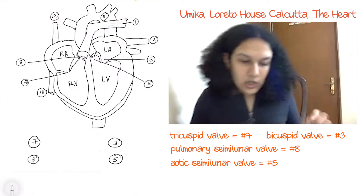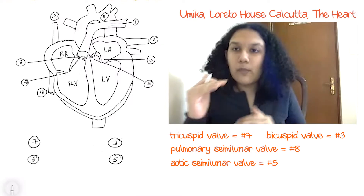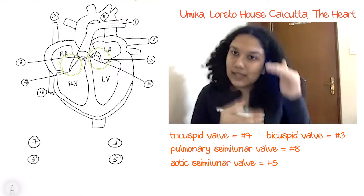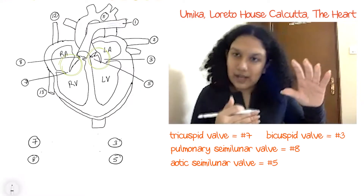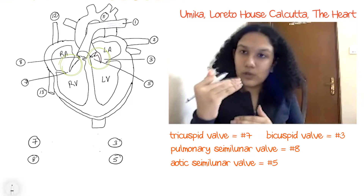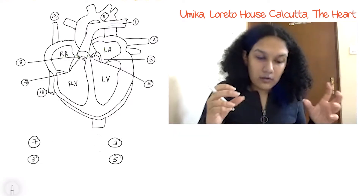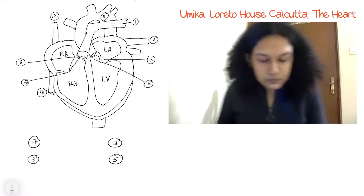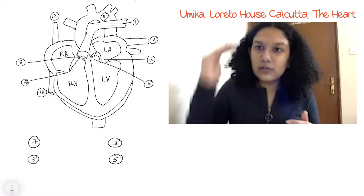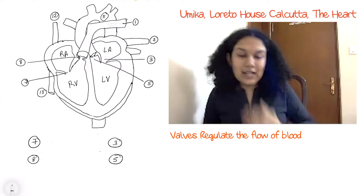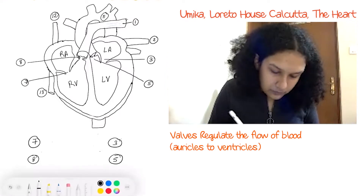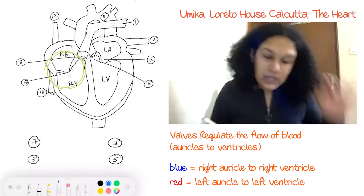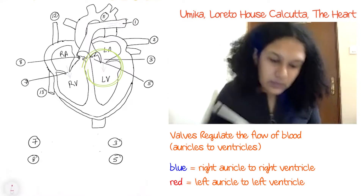The bicuspid valve is also called the mitral valve. As you can see in the diagram, it's located between the auricle and ventricle — the tricuspid valve between the right auricle and right ventricle, and the bicuspid valve between the left auricle and left ventricle. These valves are held in place by chordae tendineae, as they're like revolving doors. Their purpose is to regulate blood flow so it only moves from the auricles to the ventricles and not backwards.